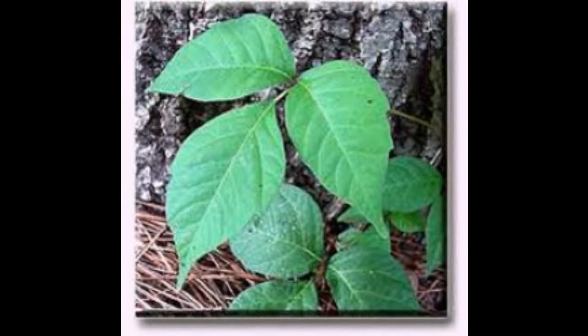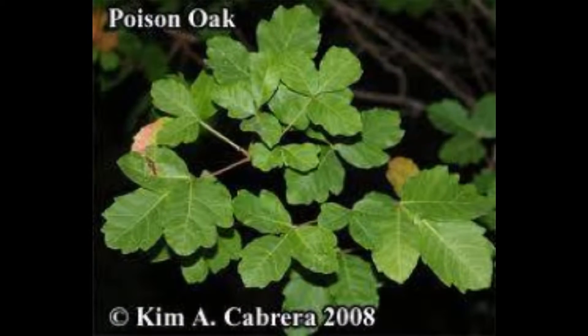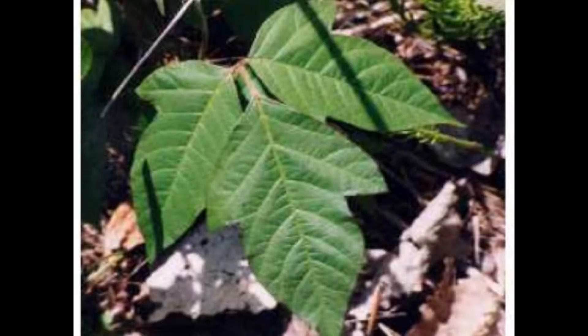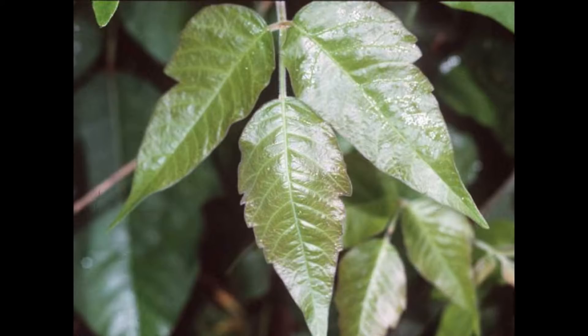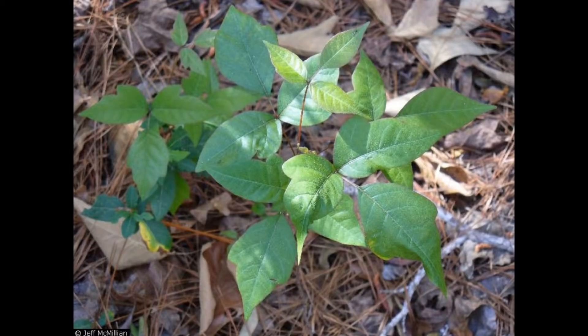Toxicodendron radicans includes poison ivy, poison oak, as well as poison sumac. The plant itself is a vine that produces leaflets that come in sets of three. The stems of the plant are woody and smooth. The stems can travel underground as well as attach to trees and fences and grow upwards. However, this plant is not always in vine form and can sometimes be found growing out of the ground like many other plants in the woods.